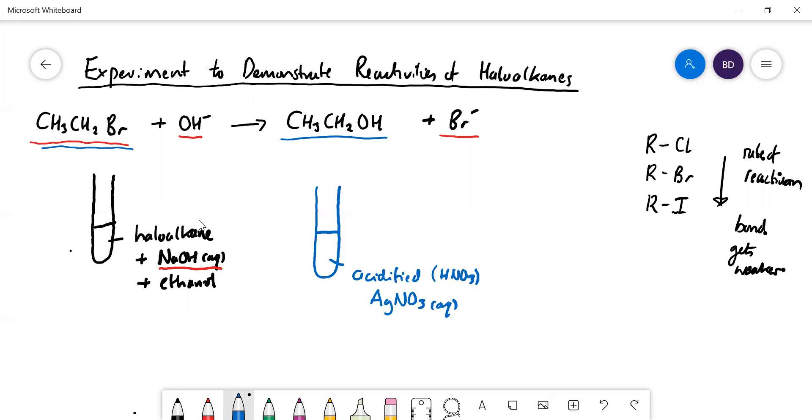But what we can do is when the reaction occurs we release the halide ion into the solution. How can we test for the halide ion? We can test for the halide ion with silver nitrate solution.